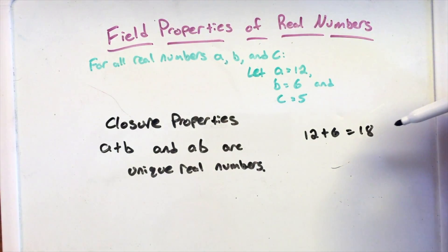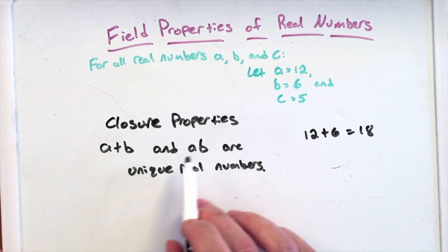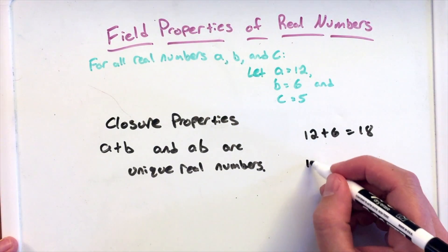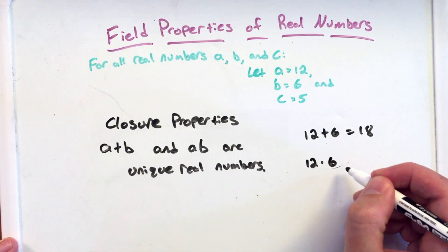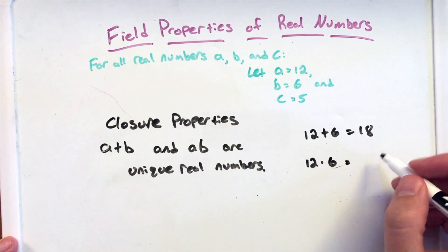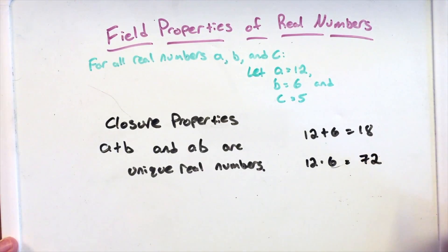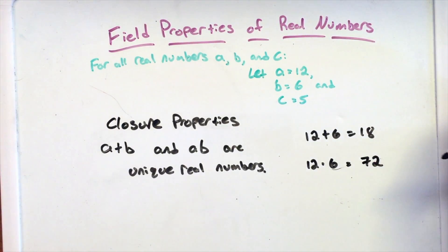Again with multiplication, a lot of these properties deal with addition and multiplication. Here, multiplication: 12 times 6. The product of 12 and 6 is 72. Again, it's another real number and it's going to be a unique real number.